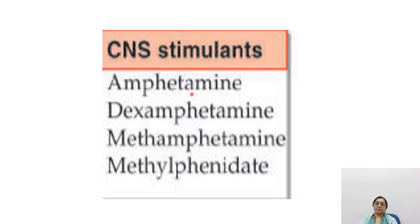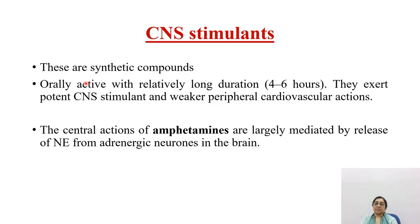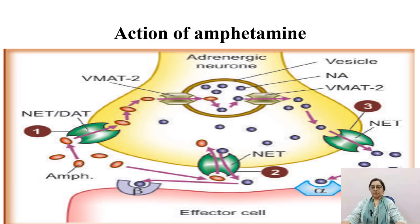CNS stimulants: amphetamine, dexamphetamine, methamphetamine, and methylphenidate are all CNS stimulants. These synthetic compounds are orally active with a long duration of action of 4–6 hours. They are potent CNS stimulants with weaker peripheral cardiovascular actions. Central action of amphetamine is largely mediated by release of norepinephrine from adrenergic neurons in the brain. Amphetamine is an indirectly acting drug which enters the neuron through the norepinephrine transporter and, via the vesicular monoamine transporter, displaces norepinephrine from vesicles, releasing it into the synaptic cleft by exchange diffusion — not requiring exocytosis — and it then acts on adrenergic receptors.